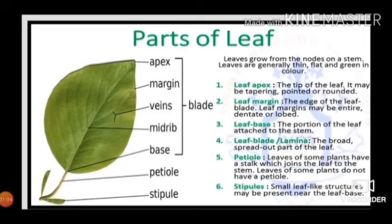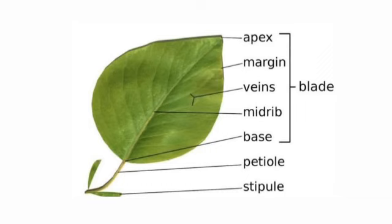The leaf apex is the tip of the leaf; it may be tapering, pointed, or round. The leaf margin refers to the edges of a leaf's blade; it may be entire, dentate, or lobed. The leaf base is the portion attached to the stem. The leaf blade or lamina is the broad, spread-out part of the leaf. The petiole is the stalk that joins the leaf to the stem; some plants do not have a petiole.